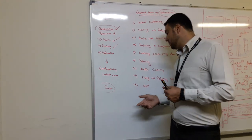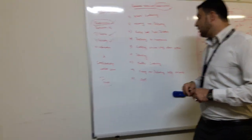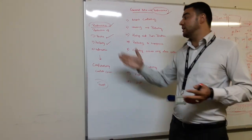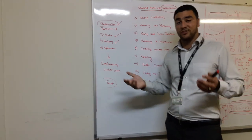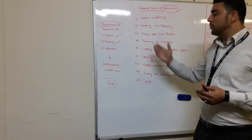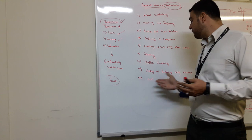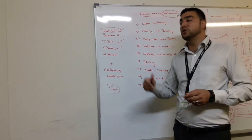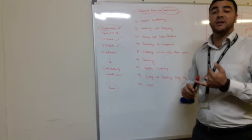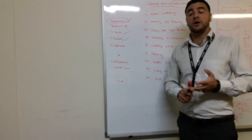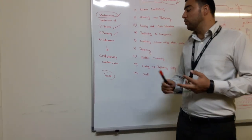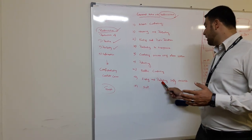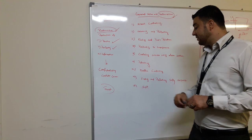The eighth duty is finding and reporting safety hazards. If there is any hazard, you need to immediately report it. If you can handle it yourself, do so; if not, inform the relevant party — whether it is maintenance, a carpenter, the police, or the fire brigade. You are responsible for finding and reporting safety hazards.